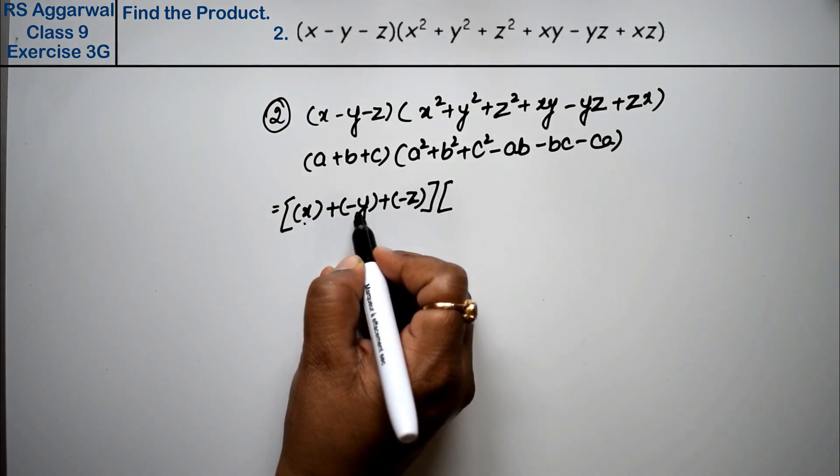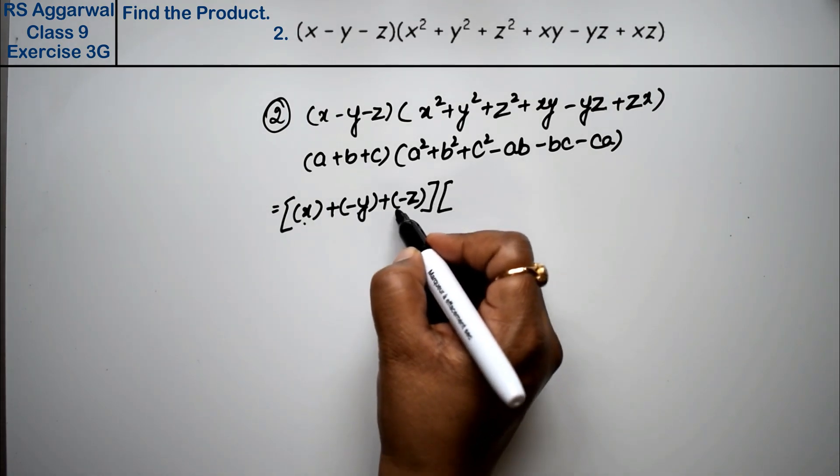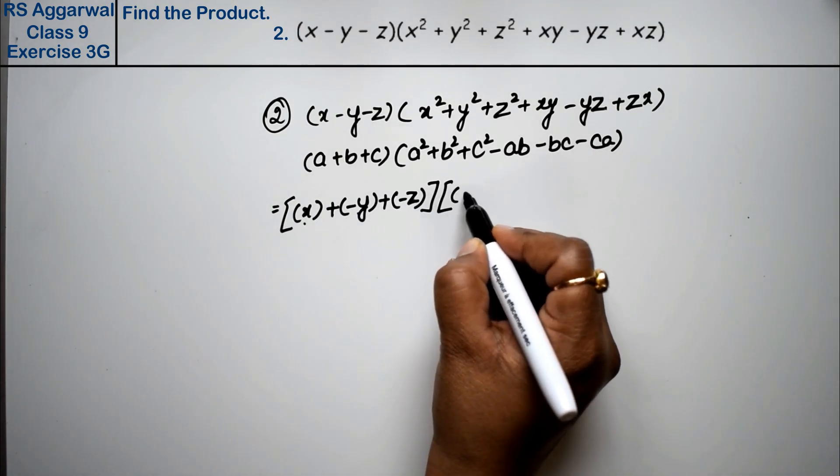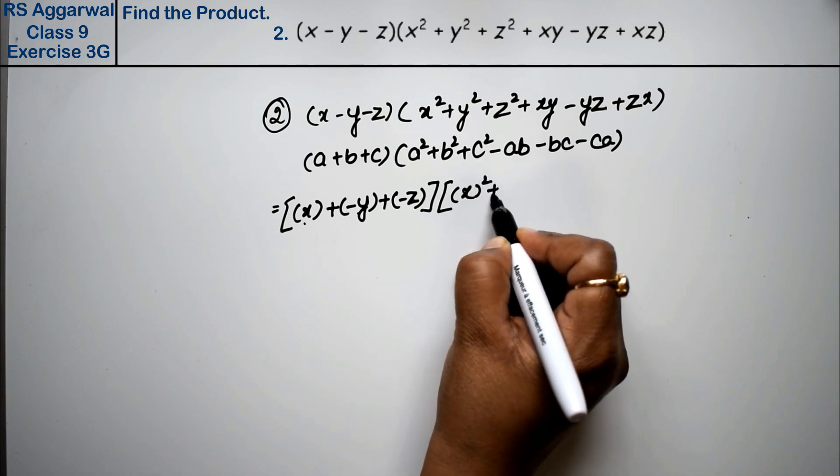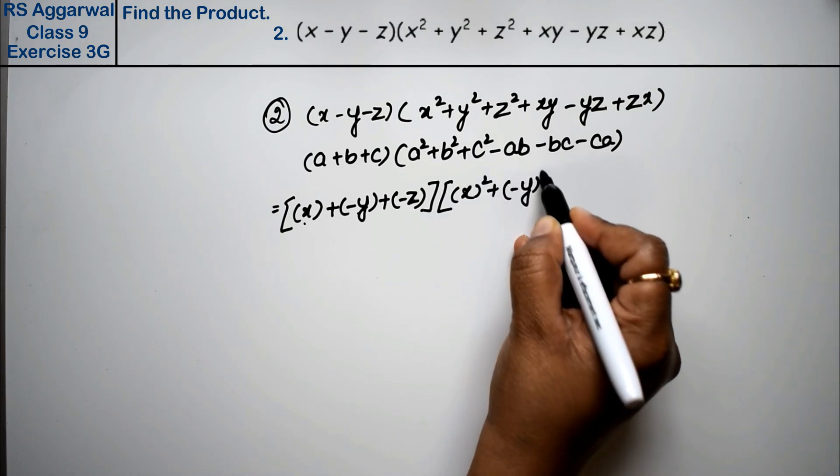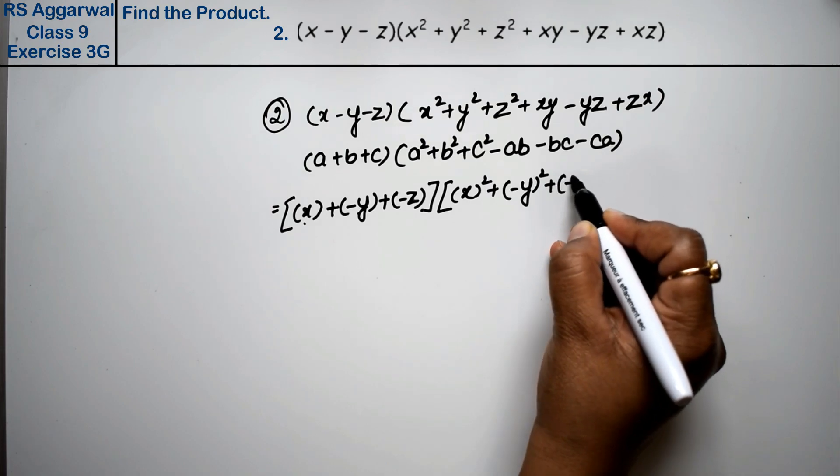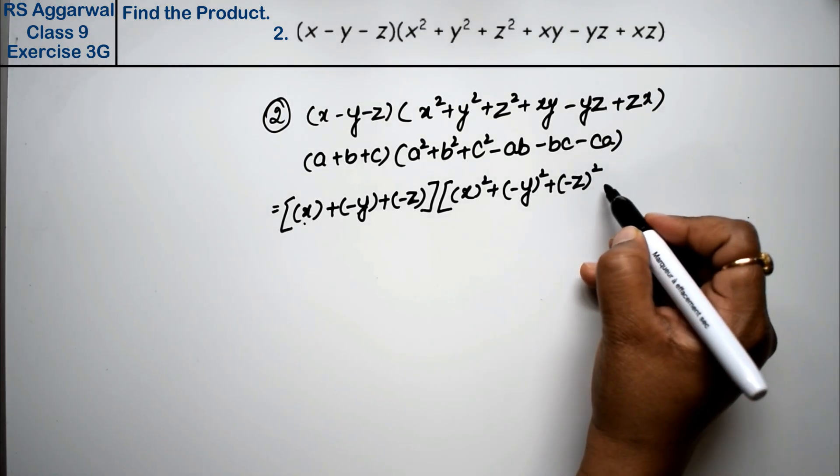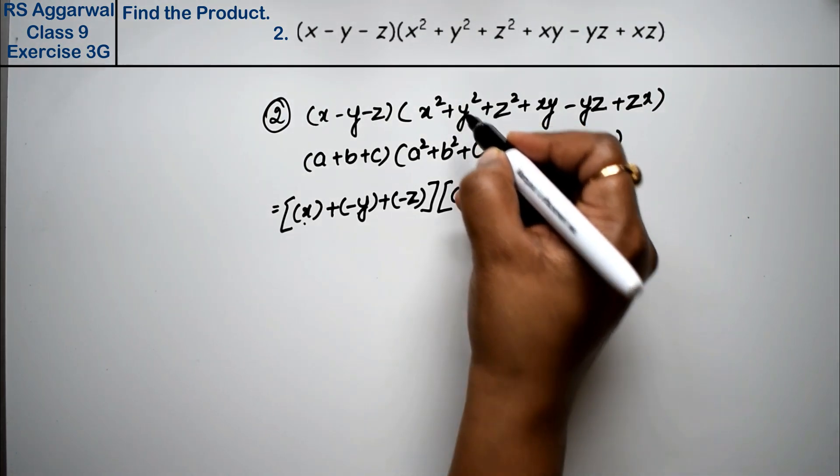Now here is a, here is b, and here is c. a² + b² + c². You can see, if you open it, then there will be values here.